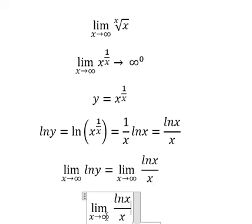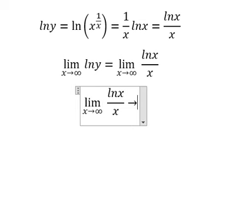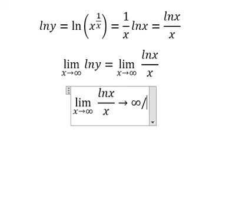When x goes to positive infinity, this one goes to positive infinity, and this one goes to positive infinity. That means we get positive infinity over positive infinity.